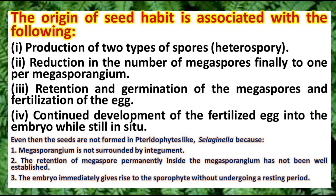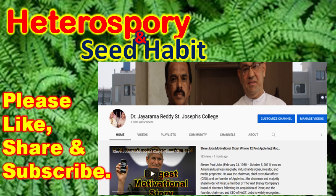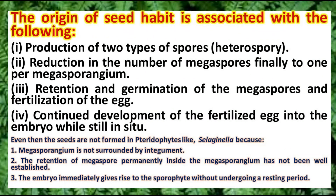Even though most of these conditions are present in pteridophytes, pteridophytes still don't produce seeds — seed habit originated only in gymnosperms. The reasons why pteridophytes don't produce seeds are that the megasporangium is not surrounded by an integument, and the embryo immediately gives rise to a sporophyte without undergoing a resting period. These are the reasons why seeds are not developed in pteridophytes, even though they possess most of the features required for seed habit.